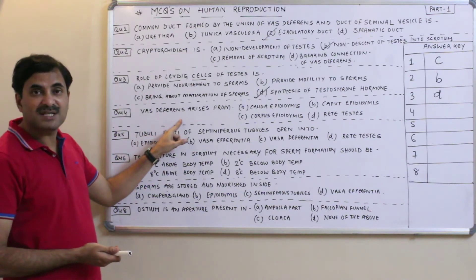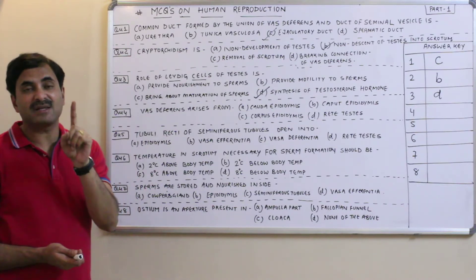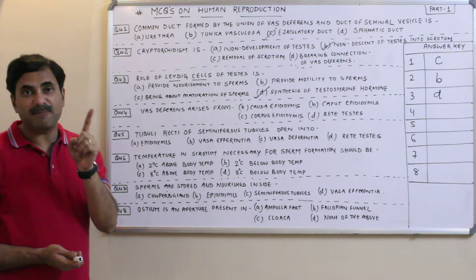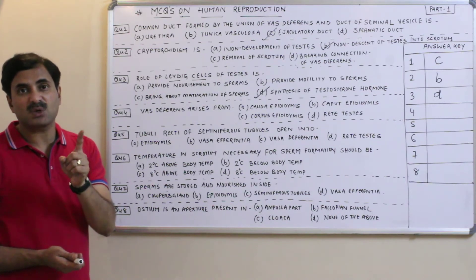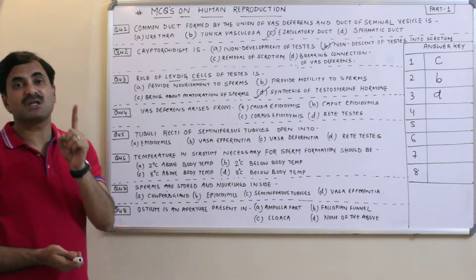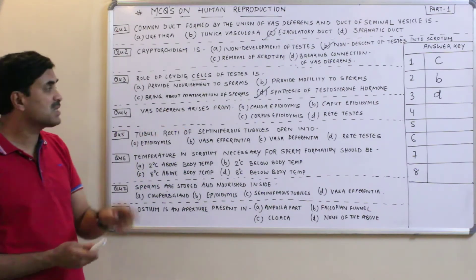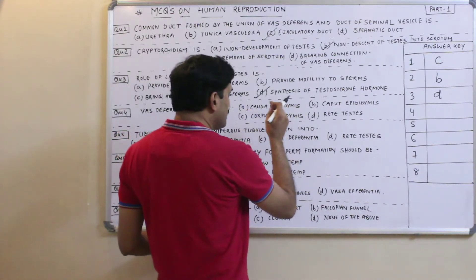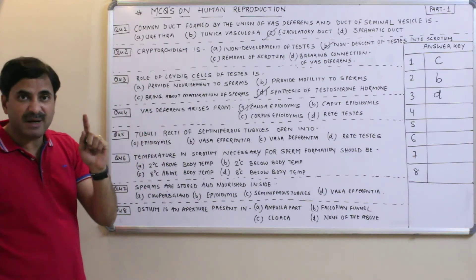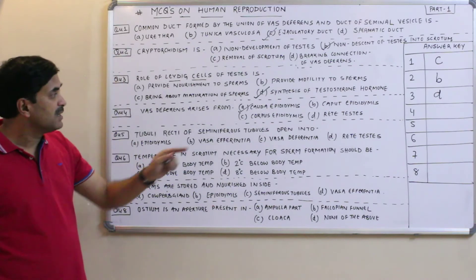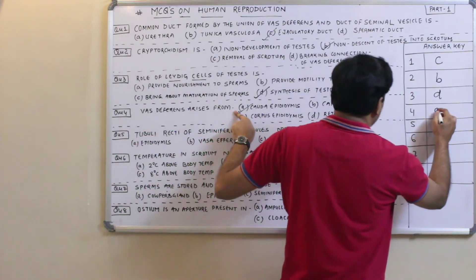Question four: Vas deferens, also known as the spermatic duct, arises from where? The epididymis has three parts: caput, corpus, and cauda. The last part, cauda epididymis, is from which the spermatic duct or vas deferens arises. Always remember — vas deferens arises from the cauda part of the epididymis. So question four has the answer A.